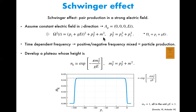Here, P_T is the transverse momentum, P_x squared plus P_y squared, and M is the fermion mass. What is important is that because you impose the field on the charged particles, they will be accelerated in that direction. You can define the so-called generalized momentum P_z, which increases with time. This in particular means that the frequency now depends on time, and if the frequency depends on time, positive and negative frequency modes will be mixed with each other as time evolves — that can be interpreted as particle production.